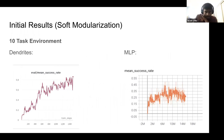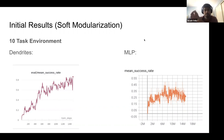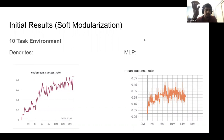Some initial results using the soft modularization code base and an older environment version with 10 tasks showed quite good dendritic performance — around 80% success rate, meaning eight out of ten tasks solved after around 15 million training steps. MLP networks got around 35 to 40% success rate. This was really promising and validated some of the potential for dendrites to be applied in this space.